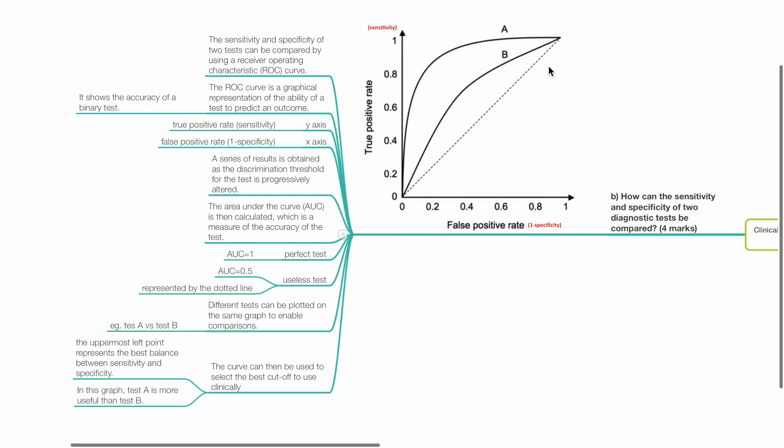Different tests can be plotted on the same graph to enable comparisons, such as test A versus test B. The curve can then be used to select the best cut-off point to use clinically. The uppermost left point represents the best balance between sensitivity and specificity. In this graph, test A is more useful than test B.